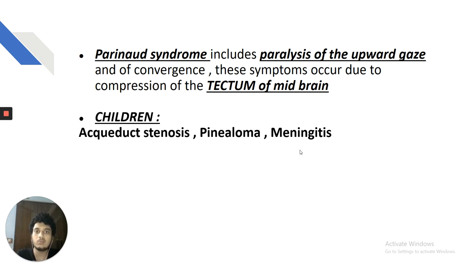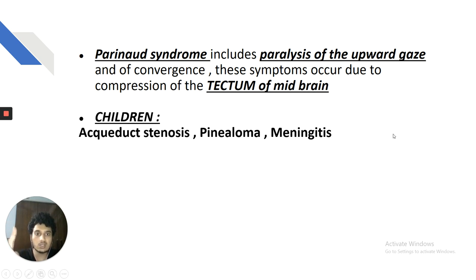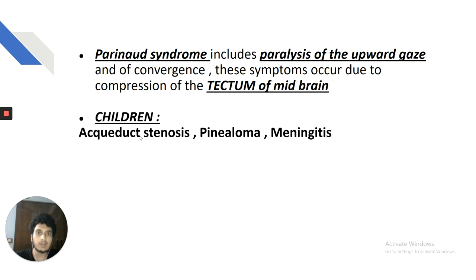You cannot keep a diagnosis of pinealoma in a 60-year-old patient. In a child with Parinaud syndrome, first think pinealoma or germinoma. Second, think aqueduct stenosis — the aqueduct of Sylvius connects the third ventricle to the fourth ventricle, and stenosis leads to CSF accumulation with raised ICP and papilledema. Third cause in children is meningitis — pinealoma, aqueduct stenosis, and meningitis are the most common causes in children.